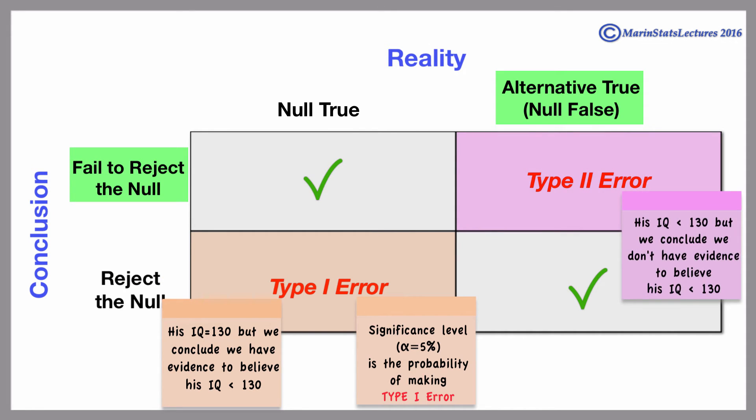This would be if Kian's IQ really is less than 130, but we conclude that we don't have enough evidence to believe that it is less than 130. A type 2 error is when we fail to reject the null when in fact the alternative is true.